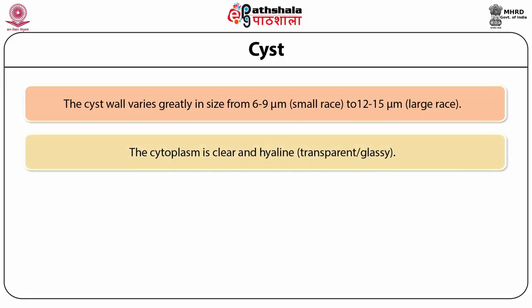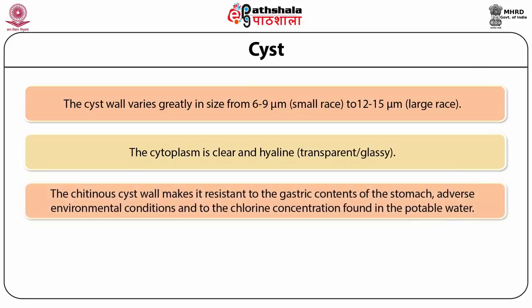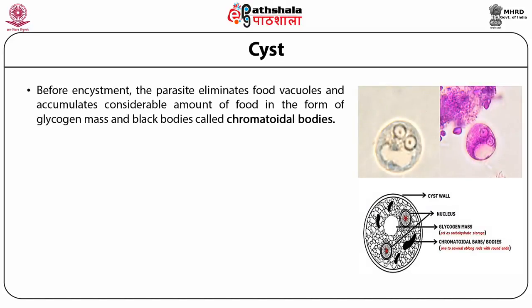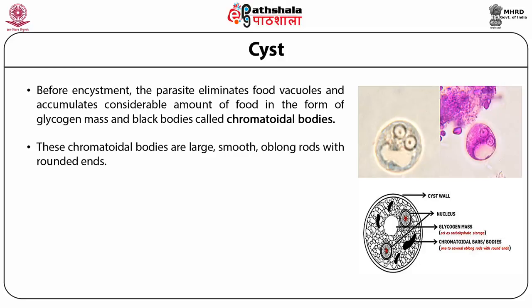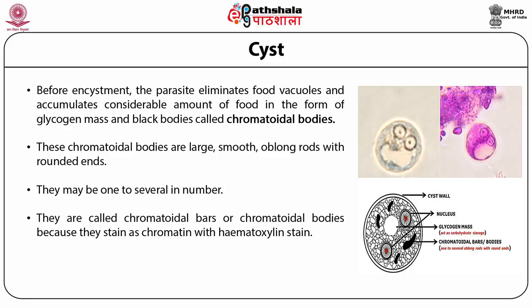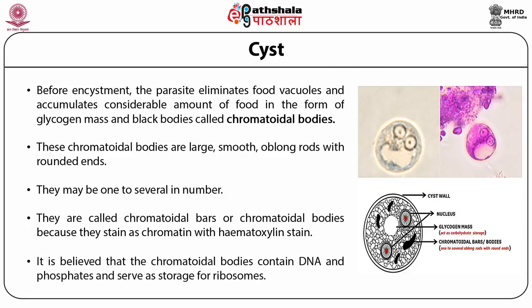The cytoplasm of the cyst is clear and hyaline — transparent and glassy. The chitinous cyst wall makes it resistant to gastric contents of the stomach, adverse environmental conditions, and the chlorine concentration found in potable water. Before encystment, the parasite eliminates food vacuoles and accumulates glycogen mass and chromatoidal bodies. These chromatoidal bodies are large, smooth, oblong rods with rounded ends, one to several in number. They stain as chromatin with hematoxylin stain and are believed to contain DNA and phosphates, serving as storage for ribosomes.